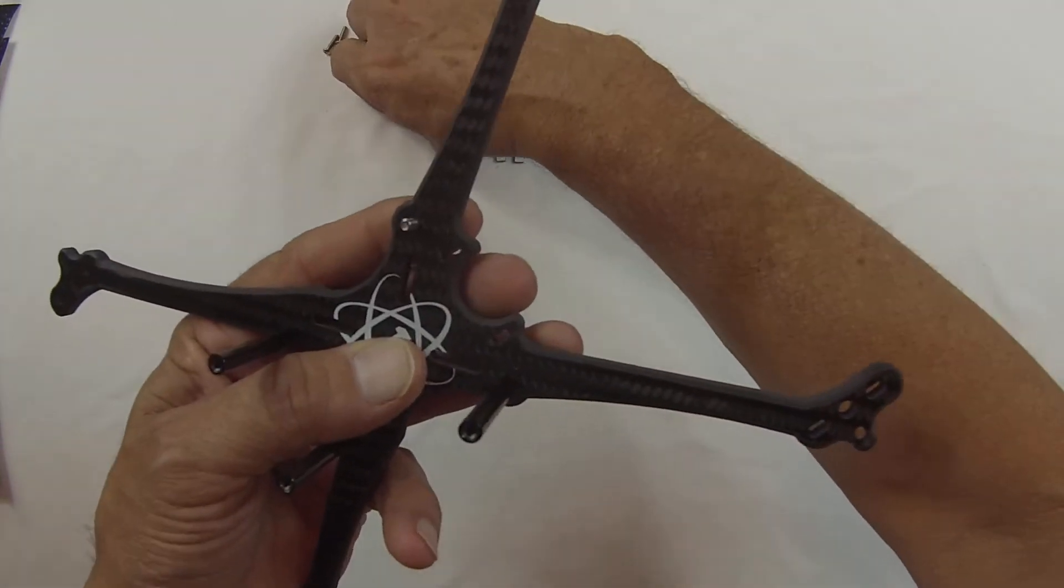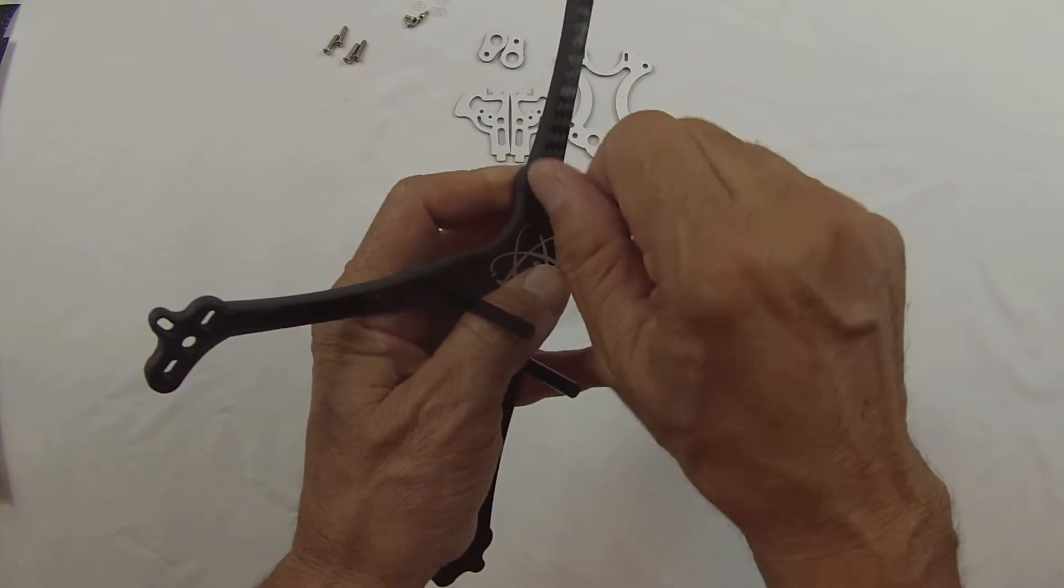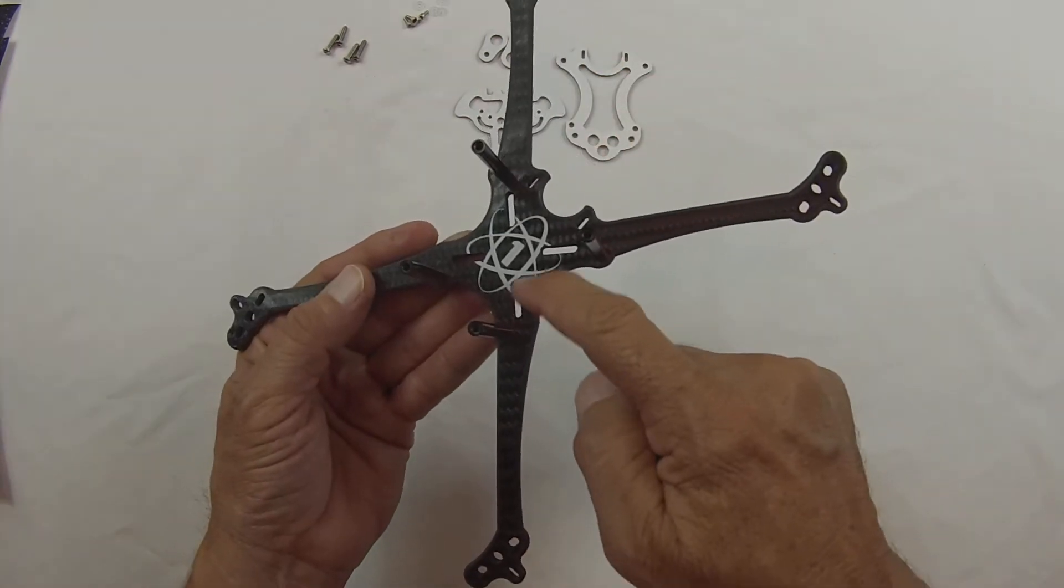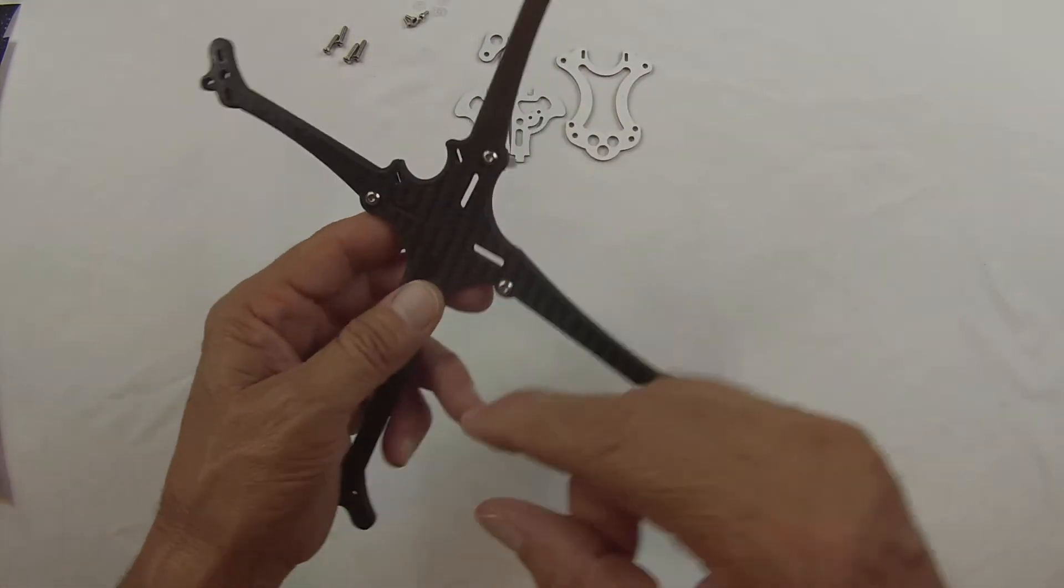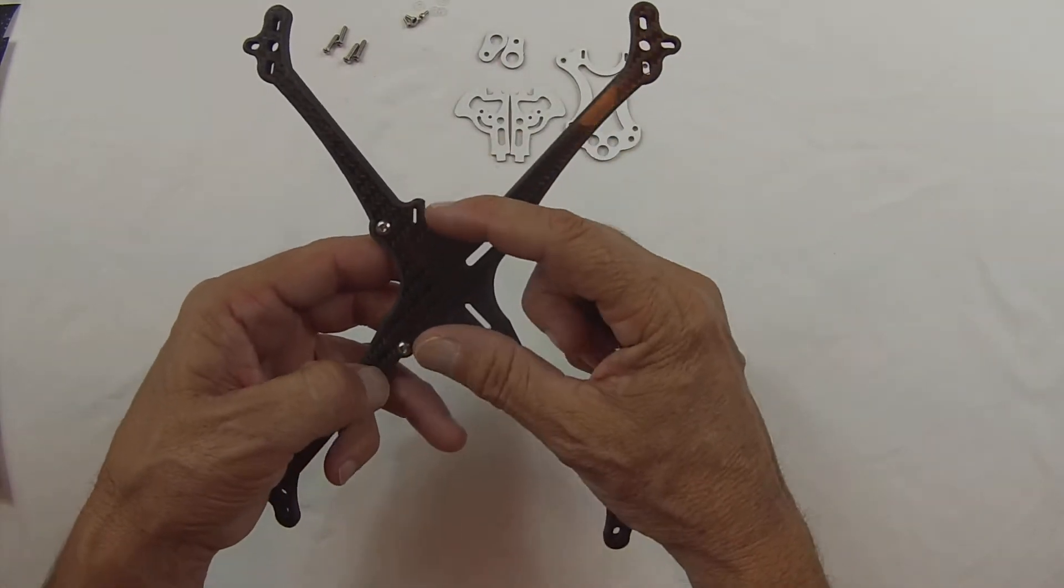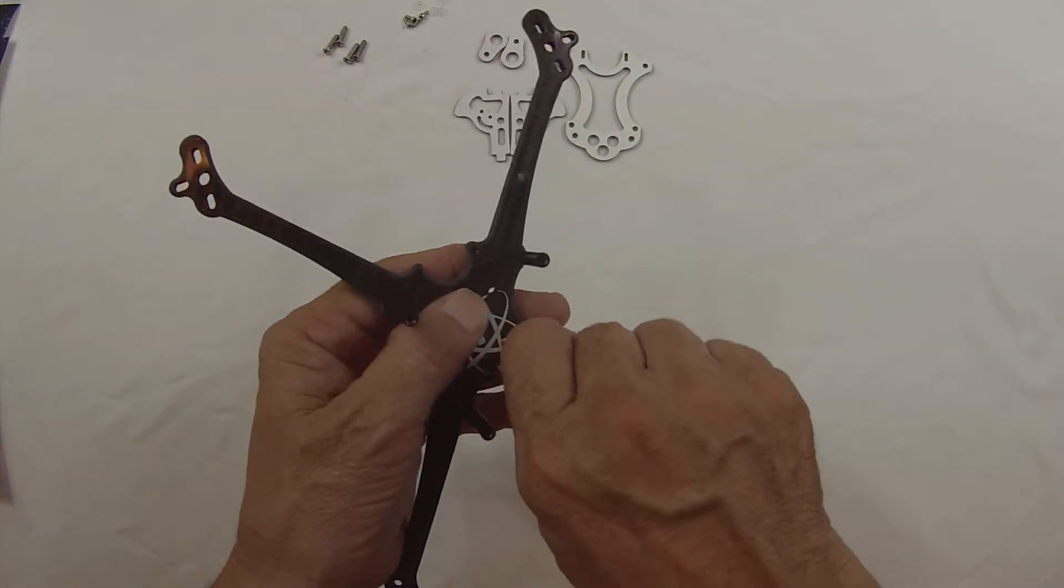One of the cool things about this frame is you'll notice the slots here. So this is for if you want to use your regular size flight controller or if you want to use that little mini 20mm flight controller. So that's what those slots are for.